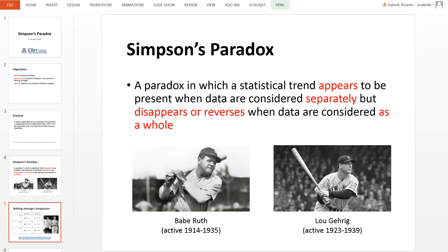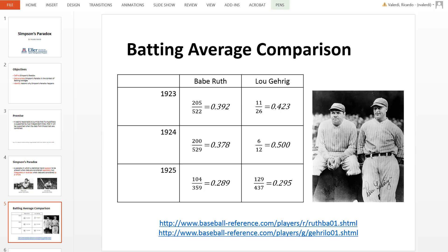Let's look at their batting averages for a three-year period. In 1923, Babe Ruth had a large number of at-bats. You'll see from his batting average: .392, .378, and .289. He did not perform as well as Lou Gehrig.